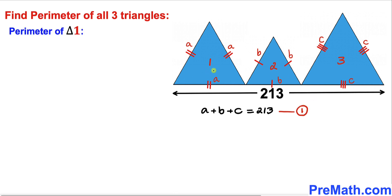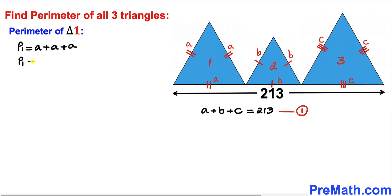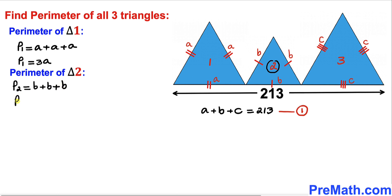Now let's calculate the perimeter of triangle one, which is going to be A plus A plus A. So therefore our perimeter P1 is going to be equal to 3A. Now let's go ahead and calculate the perimeter of triangle two. So P2 equals B plus B plus B, and therefore our perimeter P2 is going to be 3B.